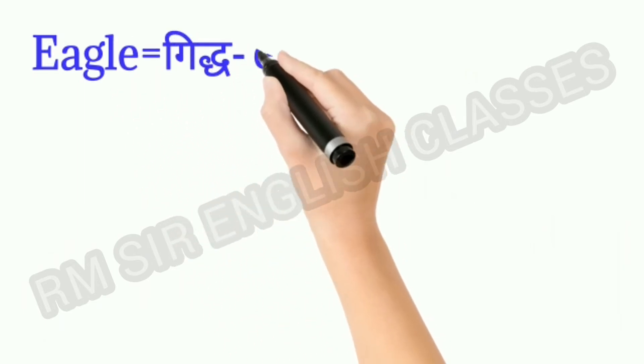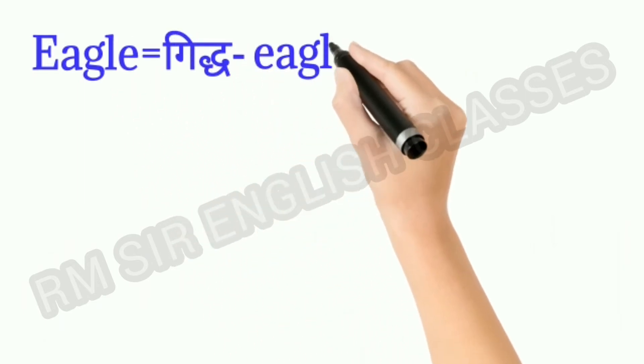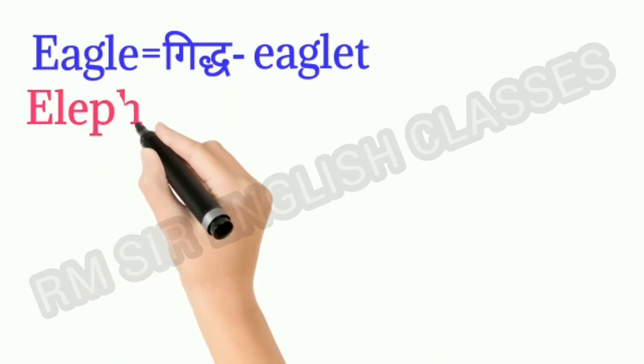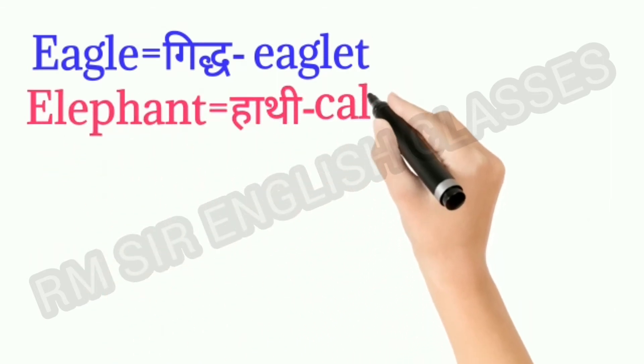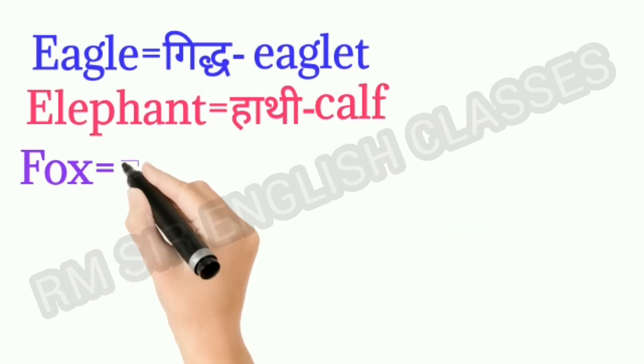Eagle means gidh. The baby eagle is called eaglet. Elephant means hathi. Baby elephant is called calf.